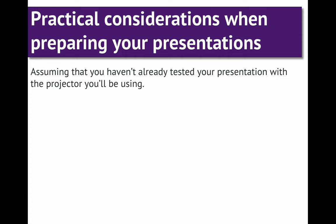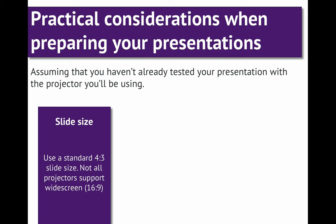Here are a few practical considerations when preparing your presentations — assuming you haven't already tested with the projector you'll be using, which is quite often the case. Slide size: make sure you use a standard 4:3 slide size. Not all projectors support widescreen, which is 16:9 orientation. New versions of PowerPoint tend to default to 16:9 — make sure you switch to 4:3. A 4:3 dimension will always work on any screen, whereas a widescreen orientation won't look great on a non-widescreen projector.